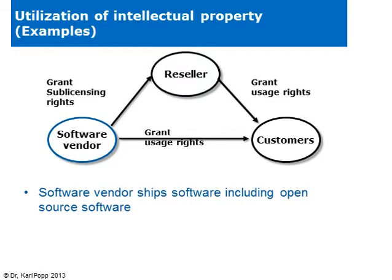Open source software is intellectual property, and there are certain intellectual property rights as well as license terms. If you want to make use of it in a commercial product, we have to look at exactly what we are planning to do with that commercial product containing open source software. For example, a software vendor sells software to customers and grants usage rights, but may also leverage a reseller, who gets sub-licensing rights from the vendor to grant usage rights to the customer.